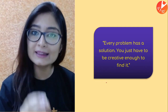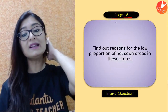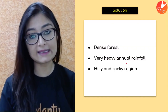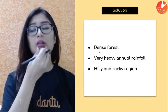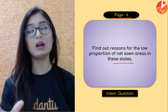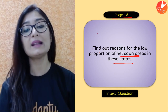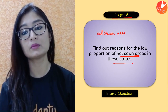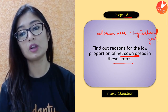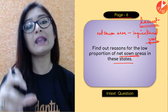Let's start with our first question given on page number 6: Find out reasons for the low proportion of net sown area in these states. So basically, what is the net sown area? The net sown area is the area where planting happens — the area counted only once in a year.